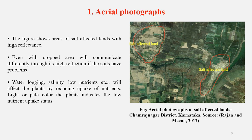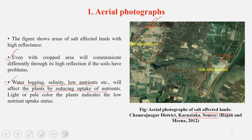This aerial photograph shows salt-affected lands in Karnataka. The color is important to understand the area — the picture shows salt-affected lands with high reflectance. Even cropped areas communicate differently through high reflectance if the soils have problems. In cases of waterlogging, salinity, or low nutrients — all soil-related problems — plants will be affected by reduced nutrient uptake from soil. Through aerial photography, you will find a light or pale color in plant imagery indicating low nutrient uptake status.